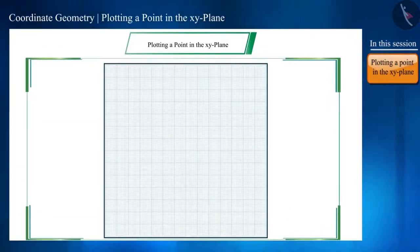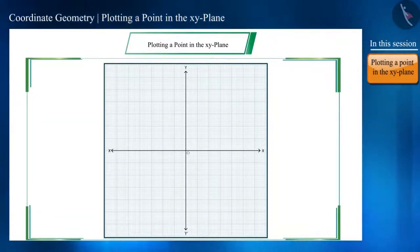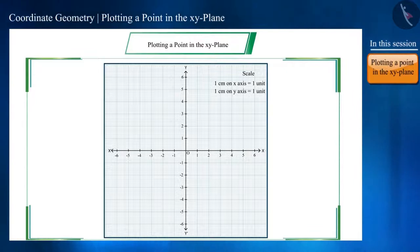First of all we will draw X and Y axis on the graph paper and write the numbers using a scale of 1 centimeter. Friends, we know that we write XY for a coordinate point, first X coordinate and then Y coordinate.